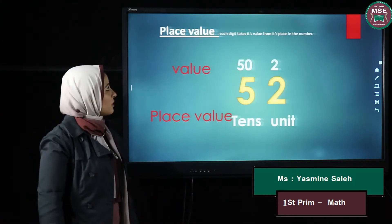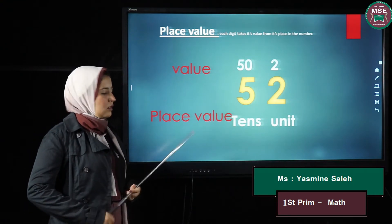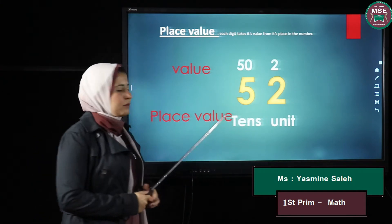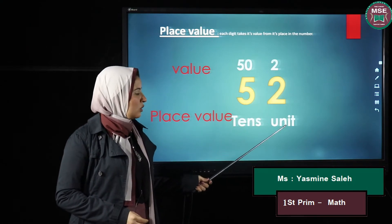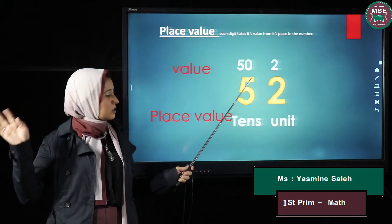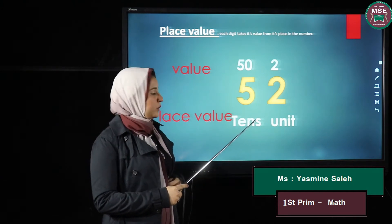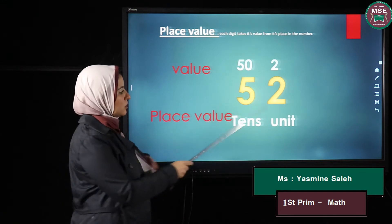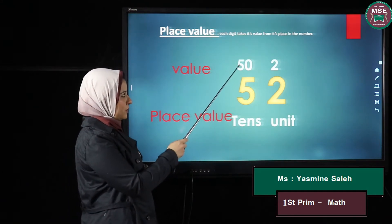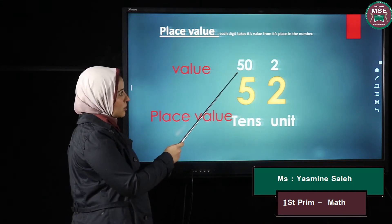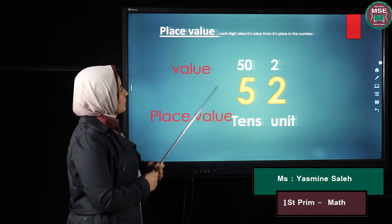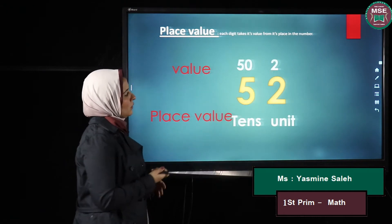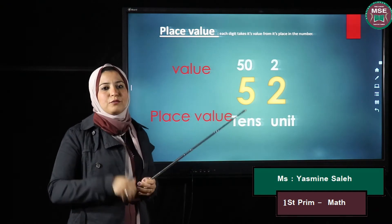Now we will talk about place value. Each digit has its value and its place value. For example, I have fifty-two. Each digit has a house, so the house of the two is units and the house of the five is tens. This house is called place value. The value of the two is only two because it is units, but the value of the five is fifty because it is tens — we put zero beside the digit. So the value of five is fifty and the value of two is two, and we say the number as fifty and two.